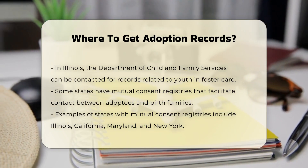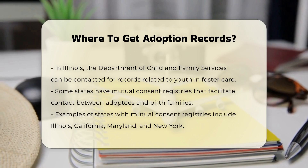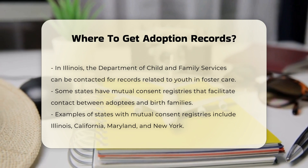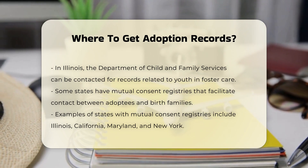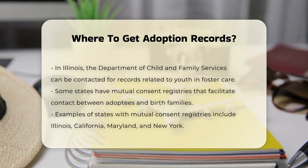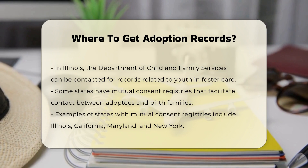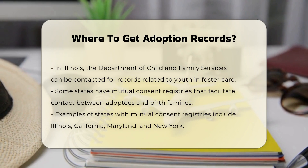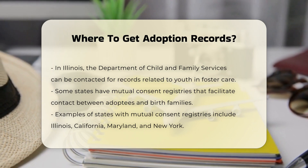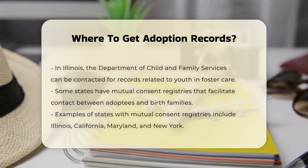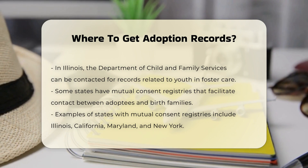To access sealed adoption records, you usually need to file a petition with the county court. You will need to explain why you are seeking access to these records, and the judge will decide whether to grant your request.